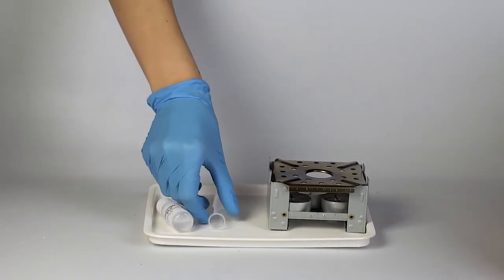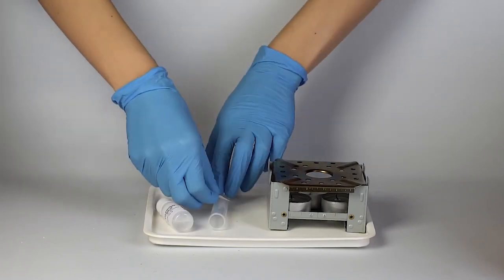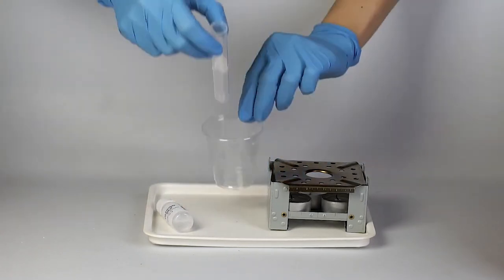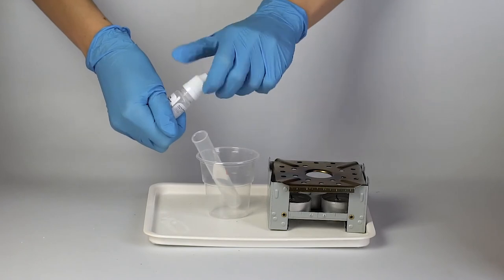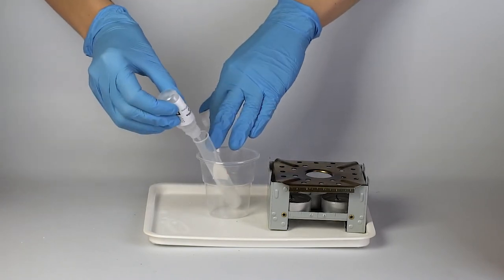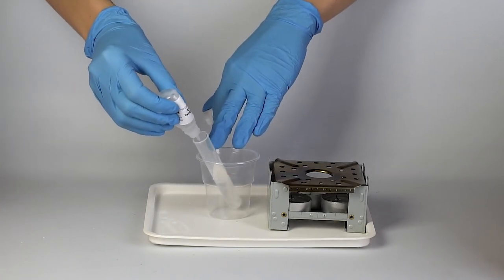Attach a square thermochrome sticker onto the test tube and place it into the disposable cup. Carefully pour all the sodium acetate from the bottle into the test tube.